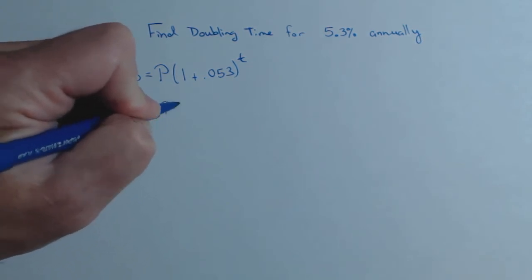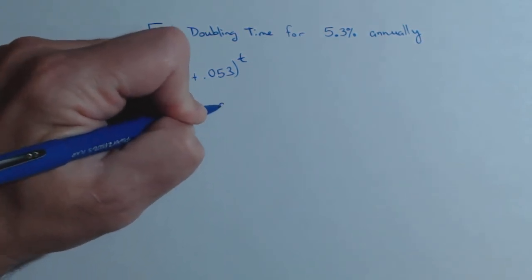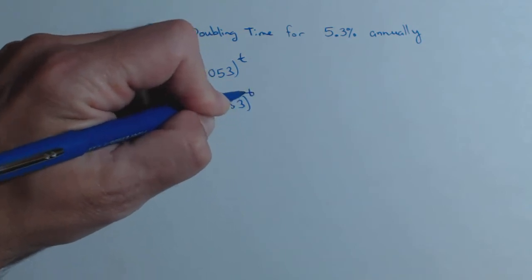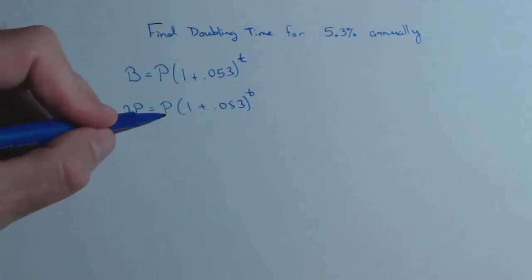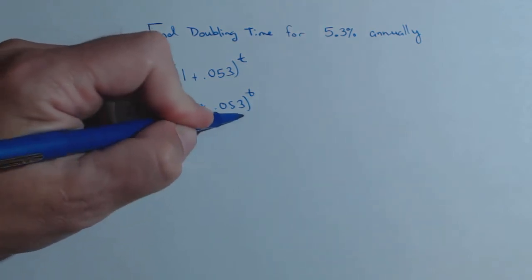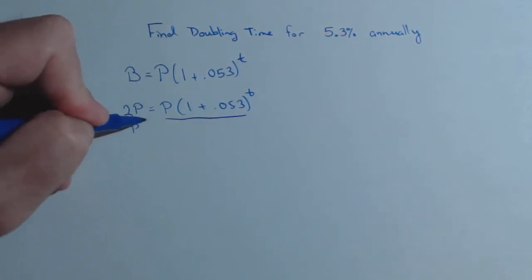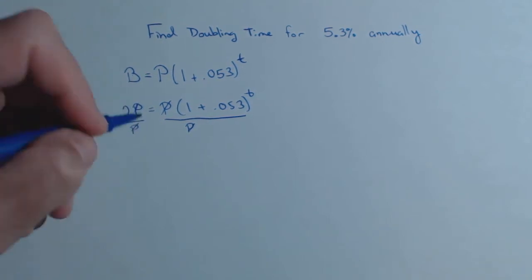So when I have double P, 1 plus .053 to the t. So if this was a 1, I'd put a 2 over here, if this was 100, I'd put 200 over here because my first step is the same in all of them, and that's to divide by what's in common, in this case, P.